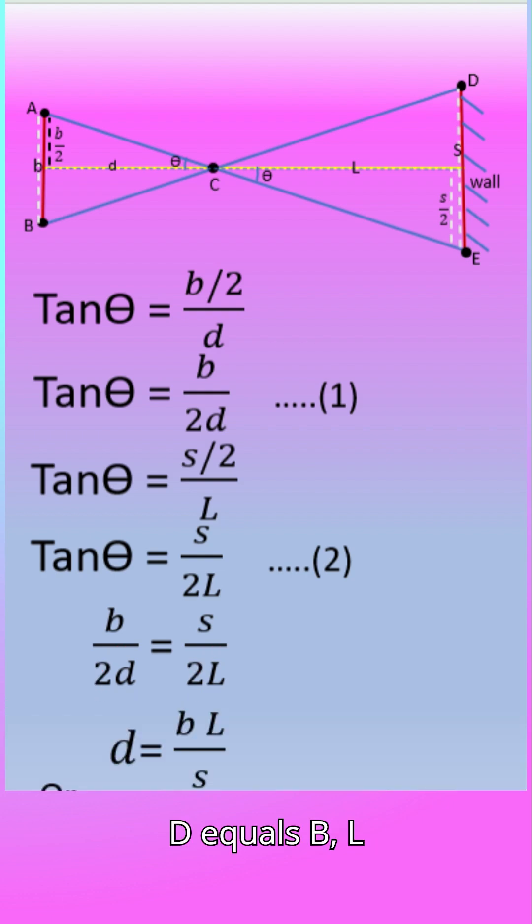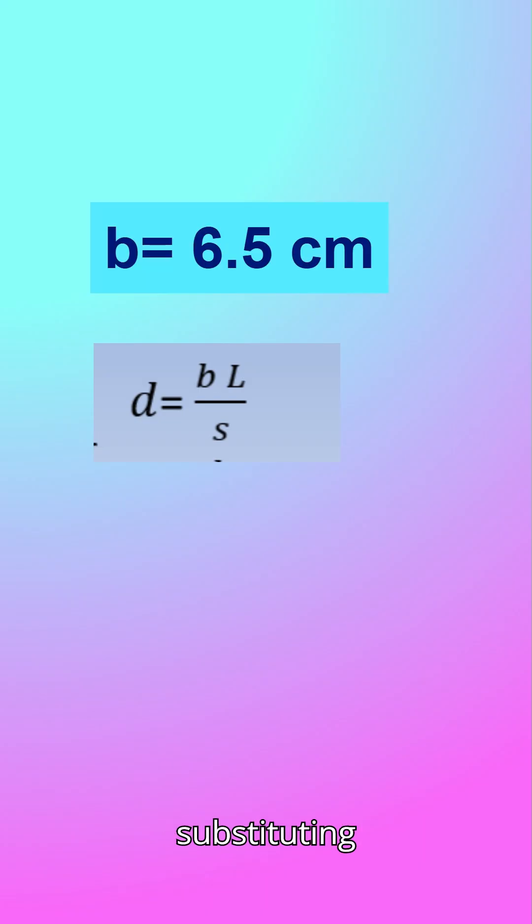Cancelling 2, D equals B L upon S. Or L equals D S upon B. In this equation substituting distance between the eyes, B equals 6.5 centimeters, and S, D values, we can calculate L.